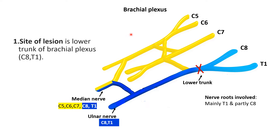The site of lesion in Klumpke's paralysis is the lower trunk of the brachial plexus, formed by the ventral rami of C8 and T1 spinal nerves. The nerve roots involved are C8 and T1, mainly T1 and partly C8. These nerve fibers are carried by two important nerves: the ulnar nerve, which contains fibers from C8 and T1, and the median nerve, which contains fibers from C5 to T1 via its medial and lateral roots, also carrying C8 and T1 fibers.